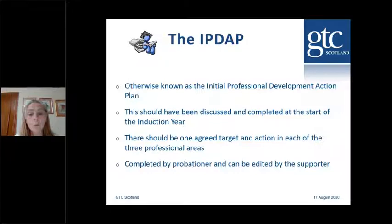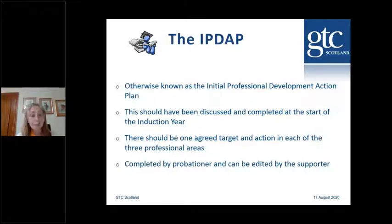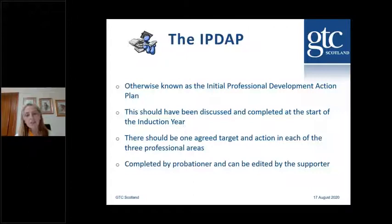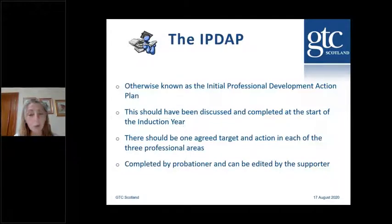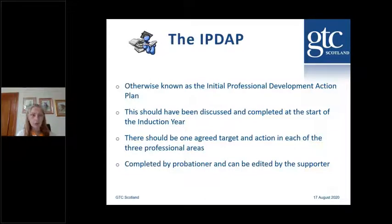Our suggestion is that there's one agreed target and action in each of the three professional areas of the standard: professional values, knowledge and understanding, and skills and abilities. We'd suggest a maximum of two targets in each area — so between three and six things. The important thing for the probationer to remember is that they have to be achievable by December. Please help them keep these targets manageable; it may be that something quite big needs to be chunked down so they can actually meet it by December.